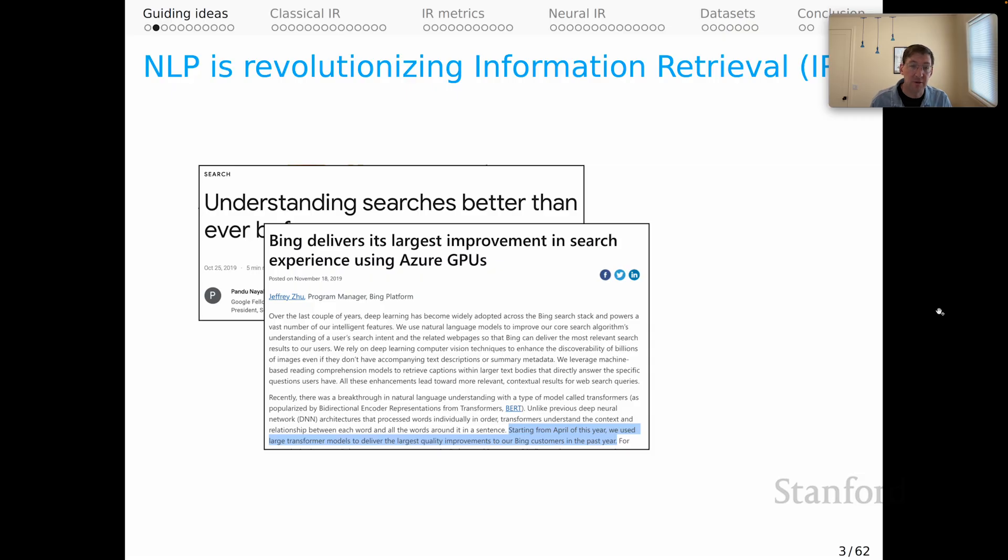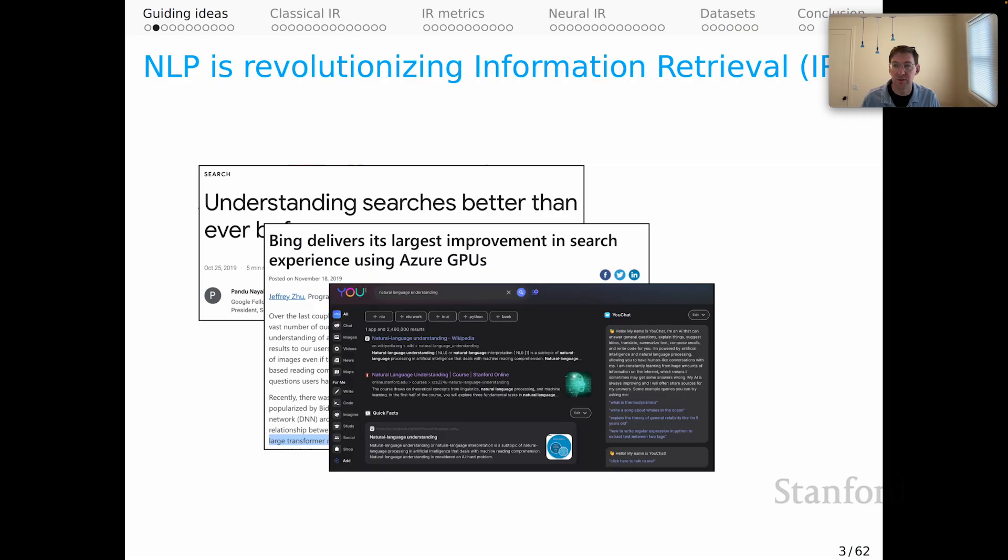A little bit later, we started to see that large language models would play a direct role in search. I think the startup u.com was really visionary in this sense, and I like to highlight u.com because its CEO, Richard Socher, is a distinguished alum of this course. u.com was way ahead of the curve in seeing that large language models could be really interesting and powerful aspects of web search. And we've seen lots of activity in that space since then.